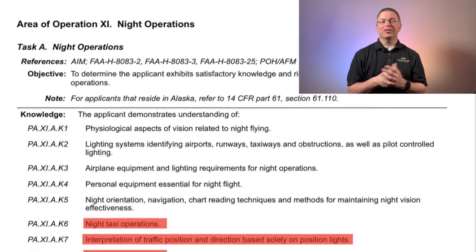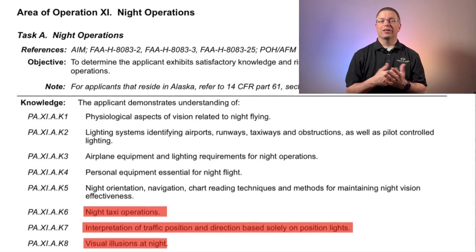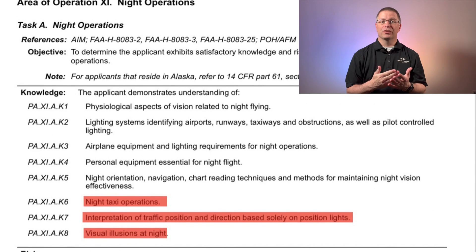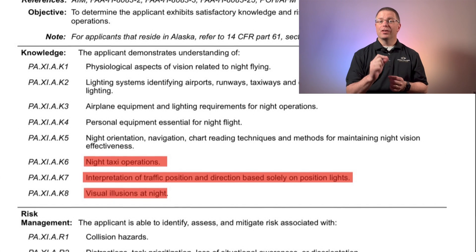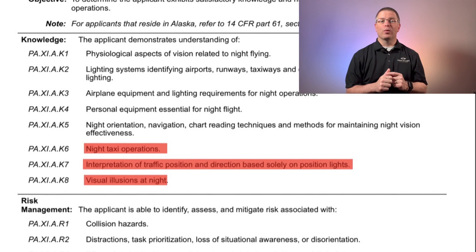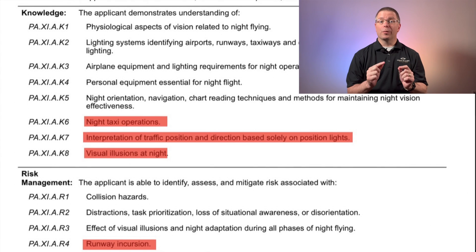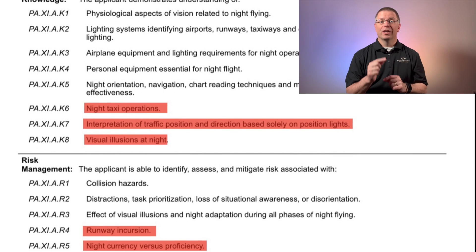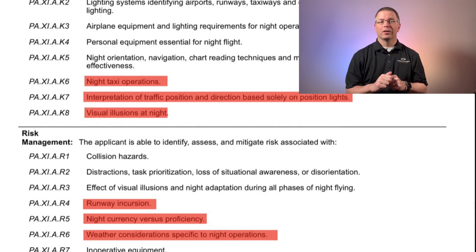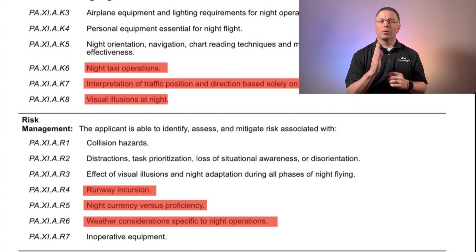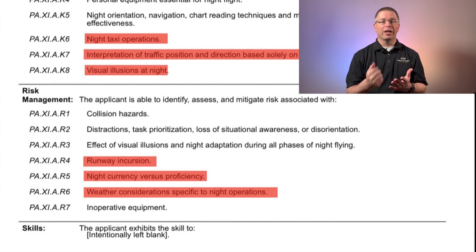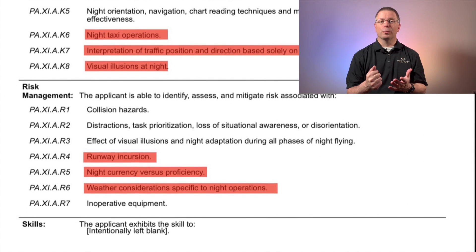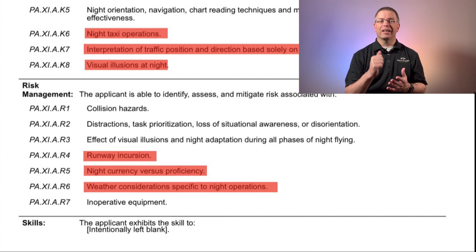The changes to Area of Operation 11, Night Operations, include an increased focus on night taxiing, the need to demonstrate relative aircraft position based only on position lights, and visual illusions at night. Further, risk elements were added regarding runway incursions, night currency versus proficiency, night weather, and inoperative equipment at night.